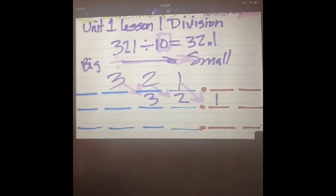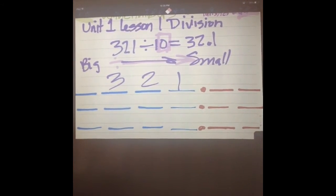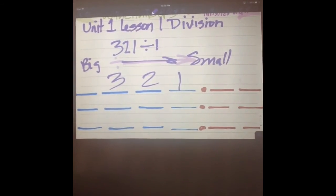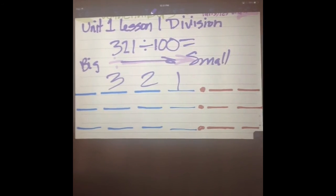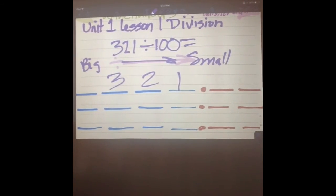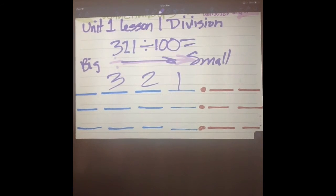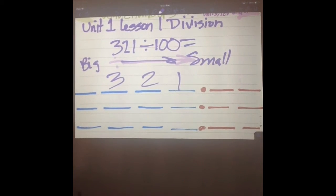Why don't we just change our numbers slightly? Rather than divide by ten, let's divide by a hundred. Now, if we're dividing, which way are we shifting? To the right. We're going to shift to the right, because we're going from a big number to a smaller number.